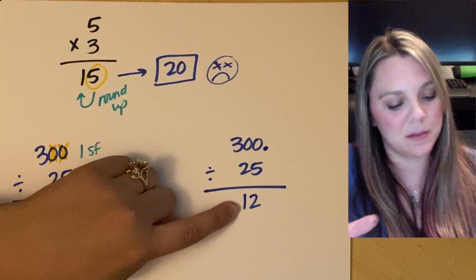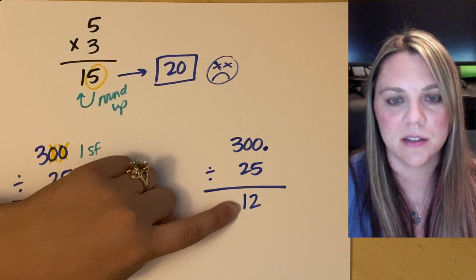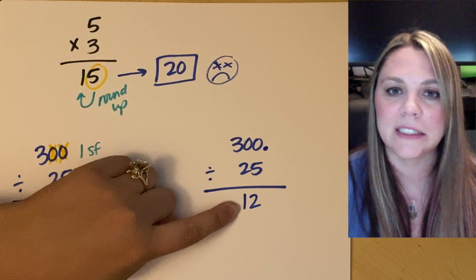Hopefully that makes sense. Multiplication, division, much easier than addition and subtraction with sig figs. Good luck.